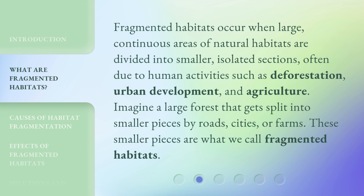Fragmented habitats occur when large, continuous areas of natural habitats are divided into smaller, isolated sections, often due to human activities such as deforestation, urban development, and agriculture. Imagine a large forest that gets split into smaller pieces by roads, cities, or farms. These smaller pieces are what we call fragmented habitats.